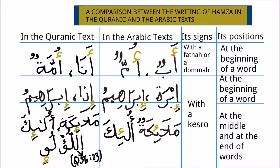When Hamza comes with an Alif at the beginning of a word, and it carries either the Fatha or the Damma signs, it is written above the Alif in both the Quranic and the Arabic text, as we have in these examples.